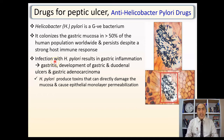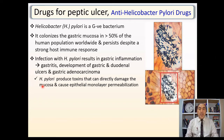Infection with this bacteria results in gastric inflammation. H. pylori produces proteases and has the capability of adhesion, permeabilization, and other damaging effects. Therefore it causes gastritis, development of peptic ulcer, and even gastric adenocarcinoma. The bacteria produce toxins that directly damage the mucosa, produce proteases, and cause epithelial monolayer permeabilization, allowing easy passage of minerals and nutrients out of the cell, so the cell can easily die.